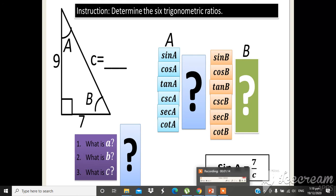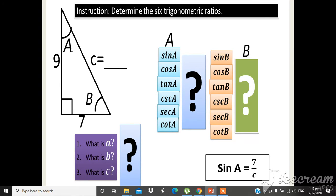Hello? Opo, sir. Now, let us proceed. Since we have already the value of C, take note lang, 11.40. So what is now the equivalent trigonometric ratio sa cosine A? Cosine A. Since cosine is adjacent over hypotenuse. So speak. Ernie, what is the equivalent trigonometric ratio sa cosine A?